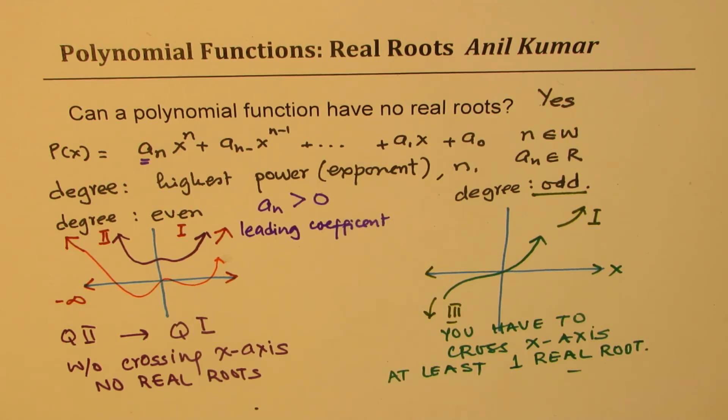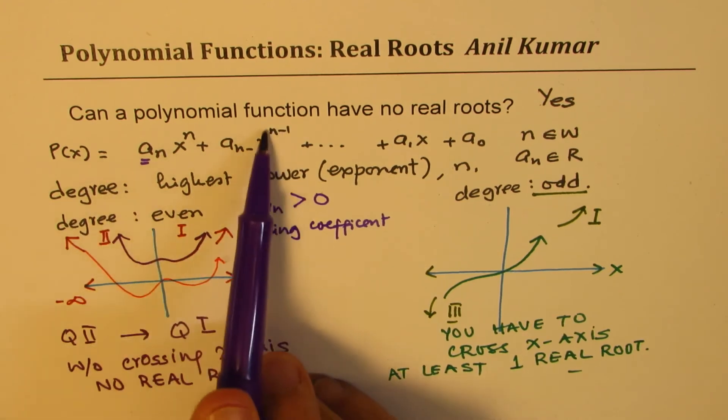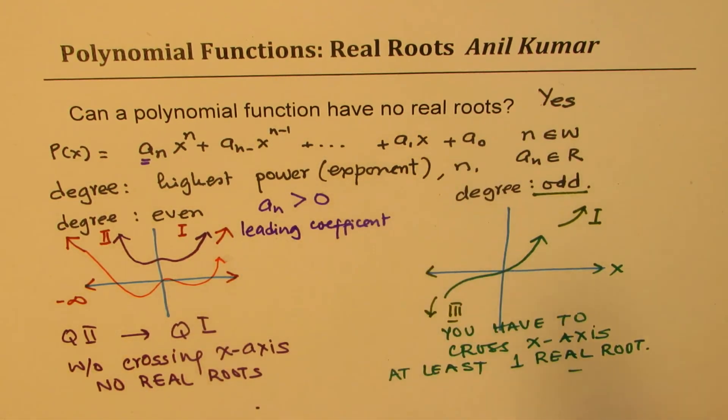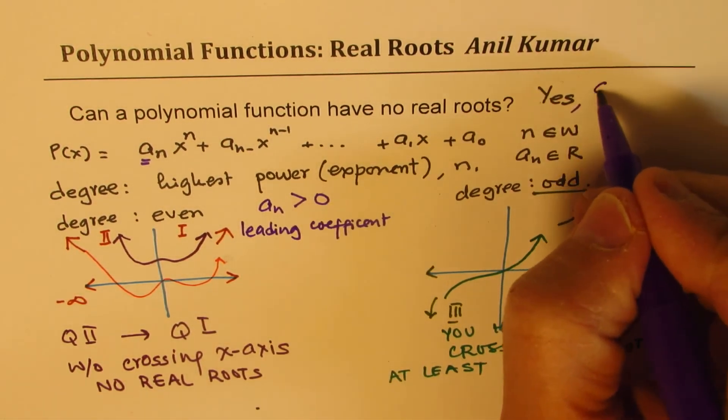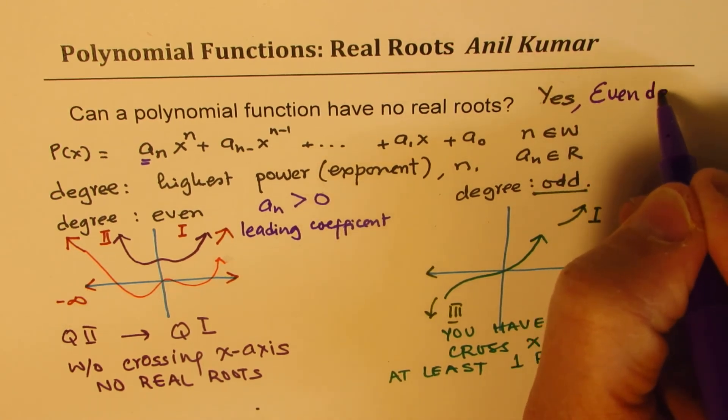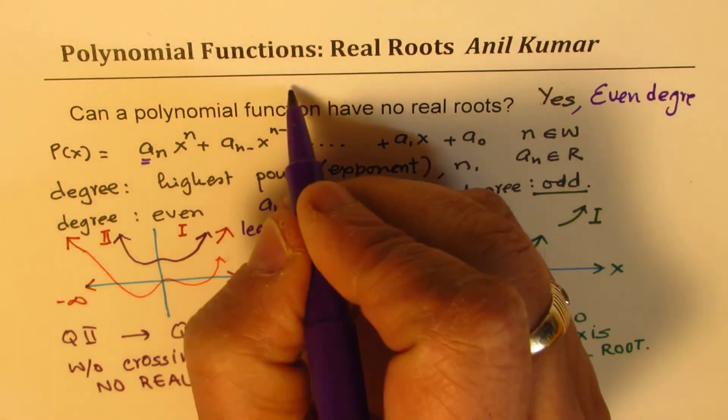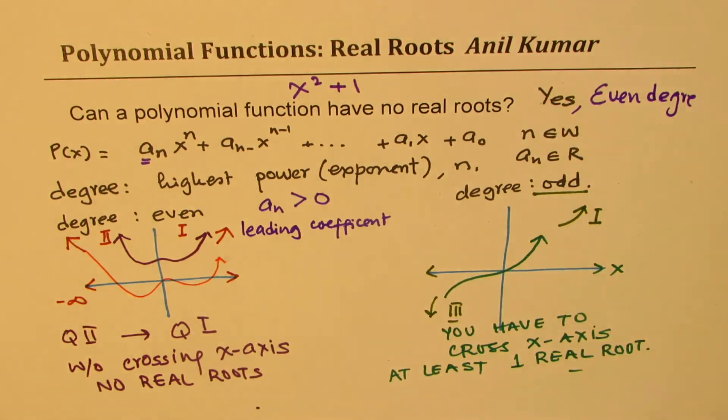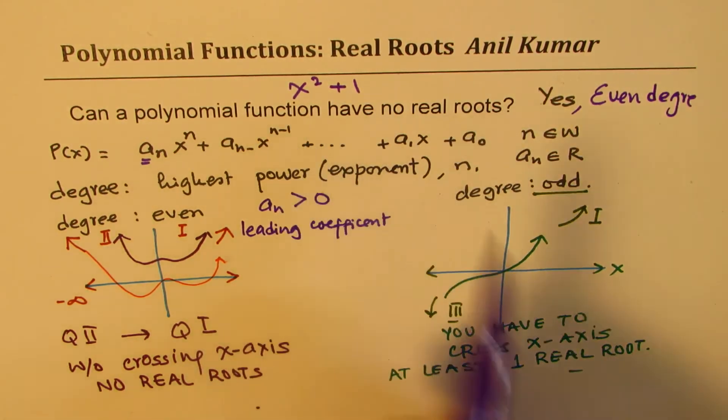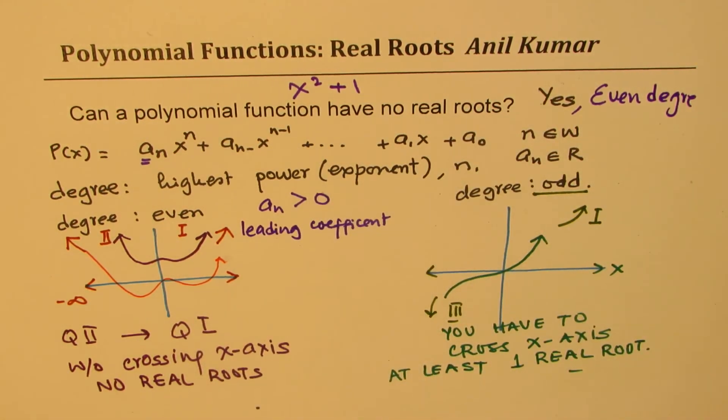So the answer is, can a polynomial function have no real roots? Yes. So in that case, even degree. Example could be, simple example is x squared plus one, for example. And there could be many examples.